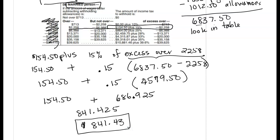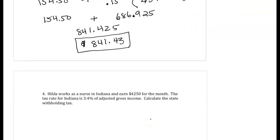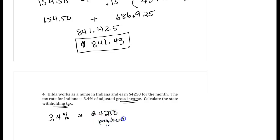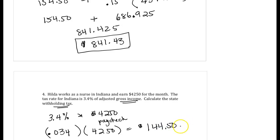One more question before a break. Hilda works as a nurse in Indiana and earns $4,250 for the month. The Indiana tax rate is 3.4% of the adjusted gross income — gross income before taxes. Calculate the withholding tax: convert 3.4% to 0.034 and multiply by $4,250, giving $144.50 in Indiana state withholding tax.